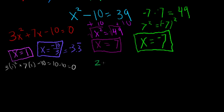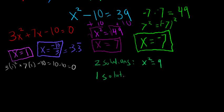A quadratic equation can have two solutions — for example, x squared equals 9 gives x equals positive 3 and x equals negative 3. It can also have one solution, like x squared equals 0, where you can't have a negative 0, so the only solution is x equals 0.